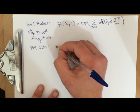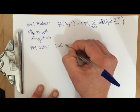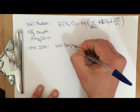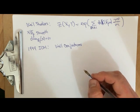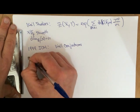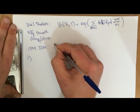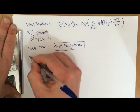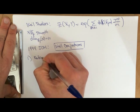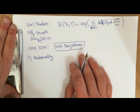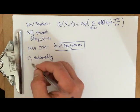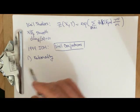He had these conjectures, called the Weil conjectures, and there are four of them. The first one is rationality: Z(X, T) is the quotient of two polynomials with coefficients in Q.